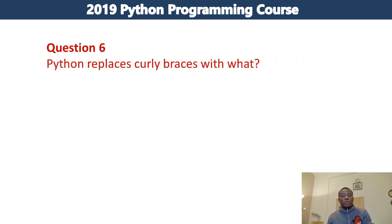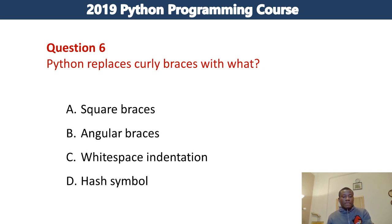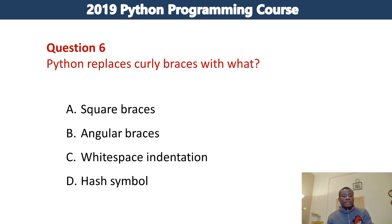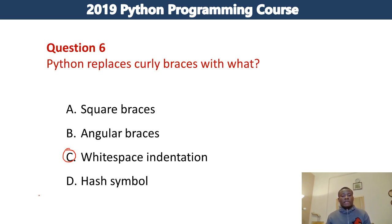Python replaces curly braces with — the options are: bytes, square braces, angular braces, white space indentation, or the hash symbol. If you followed Tutorial 1 you might not find the answer to this question, but I expect you to go online to do a little reading and find out. In Python, we don't use curly braces to indicate blocks of code — Python uses white space indentation. These are the six questions for you; it's really going to be easy, and gradually we can ease into the more challenging part of Python.